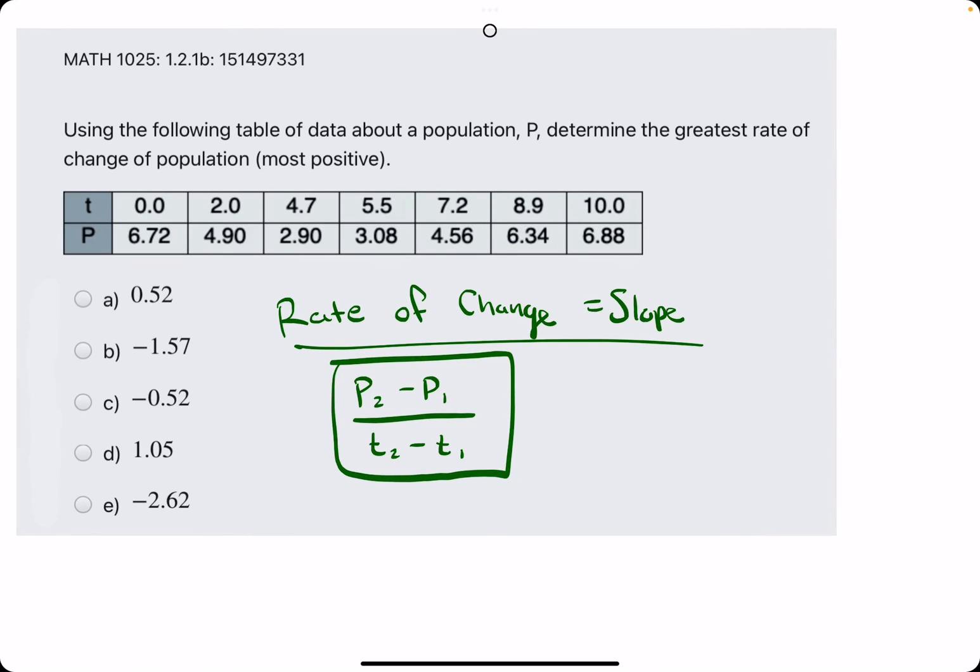Let's keep going though. So we're finding the greatest rate of change of the population given this chart. The first thing is because we're finding only the most positive slope or rate of change, we can eliminate, we can save ourselves from not finding the slope between any P values or any T values that have a decrease in the P value.